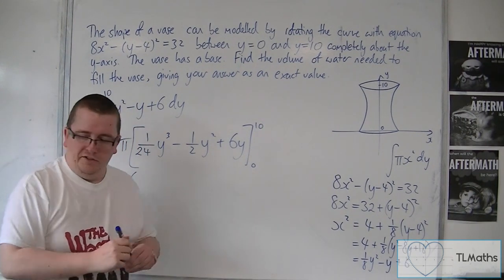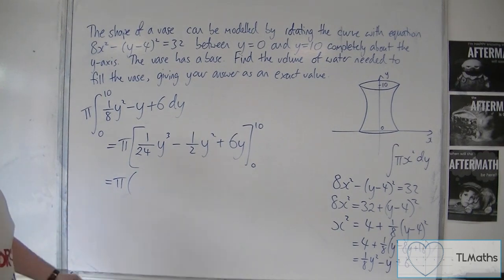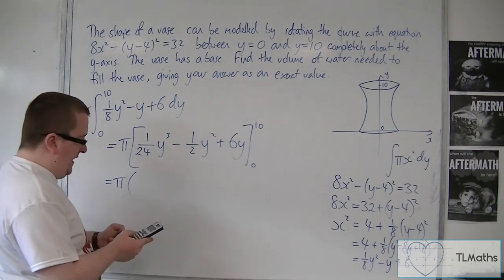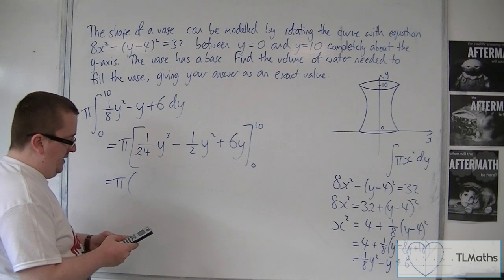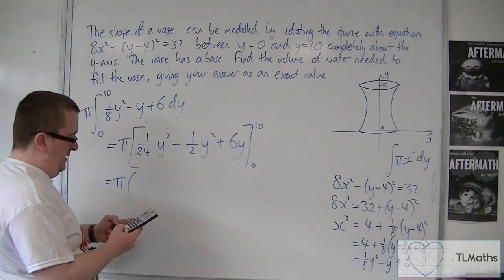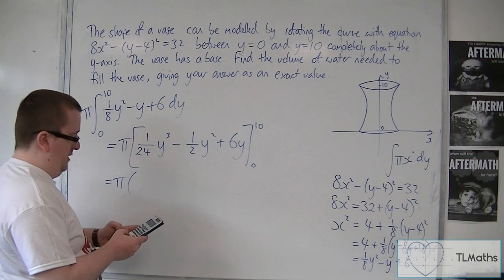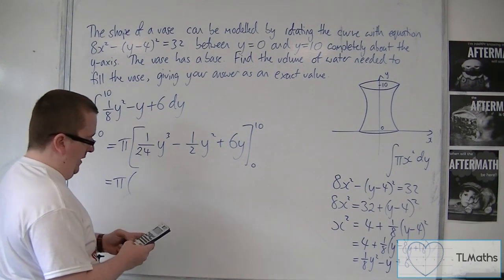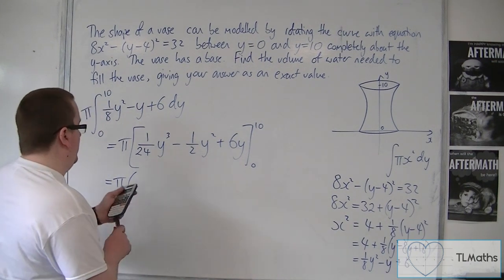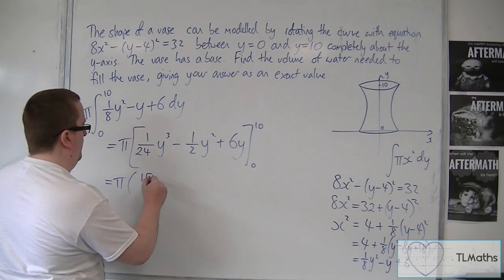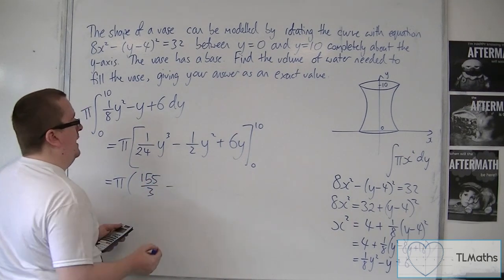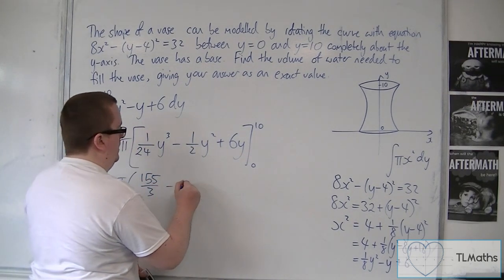So let's get the calculator ready. So substitute in 10, it's got 1/24 times 10³. Take away ½ times 10² plus 6 lots of 10. So that's 155/3. And then substituting 0, well, I get 0.